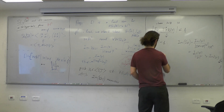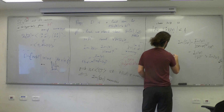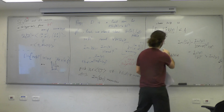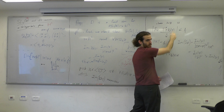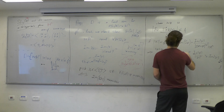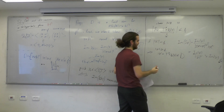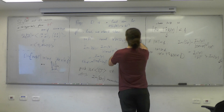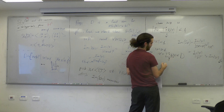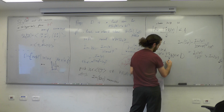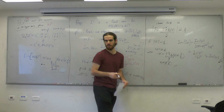We obtain that Z prime — the translation by K of gamma zero Z — has absolute value at least 1 and lies inside the strip from minus half to half, so it belongs to our fundamental domain. More formally, if we mark the corresponding element by G, then Z belongs to G-inverse of D, which ends the first part of the proof.